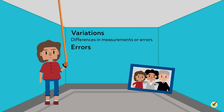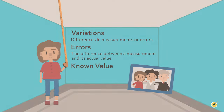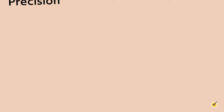In this context, the term does not mean a mistake. Instead, it refers to the difference between a measurement and its actual value, which is also called the known value. Mathematicians use certain words to talk about differences between a measurement and its known value.